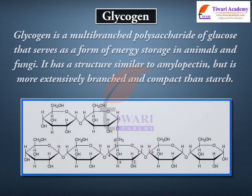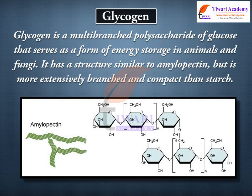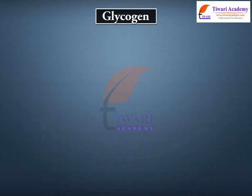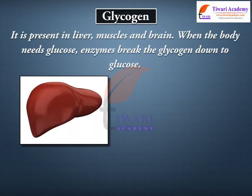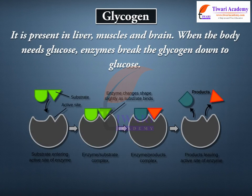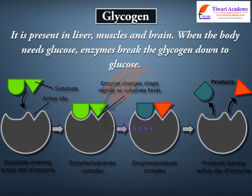Glycogen is a multi-branched polysaccharide of glucose that serves as a form of energy storage in animals and fungi. It has a structure similar to amylopectin but is more extensively branched and compact than starch. It is present in the liver, muscles, and brain. When the body needs glucose, enzymes break the glycogen down to glucose.